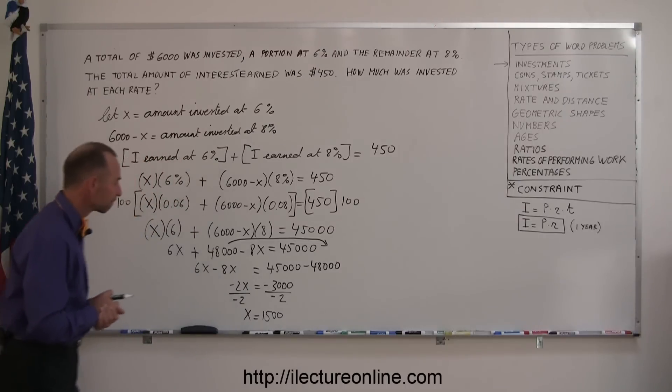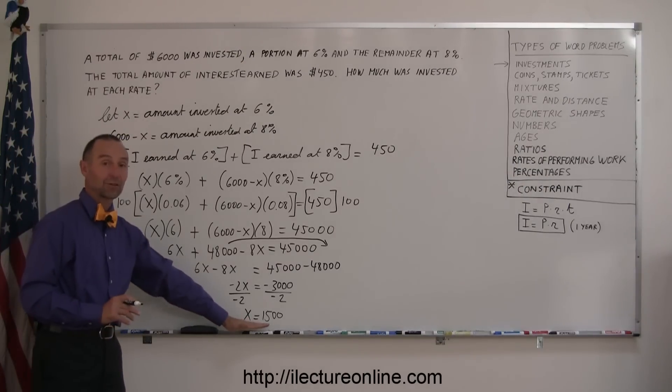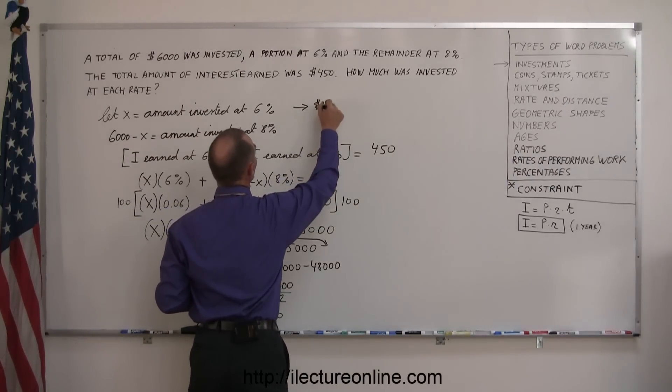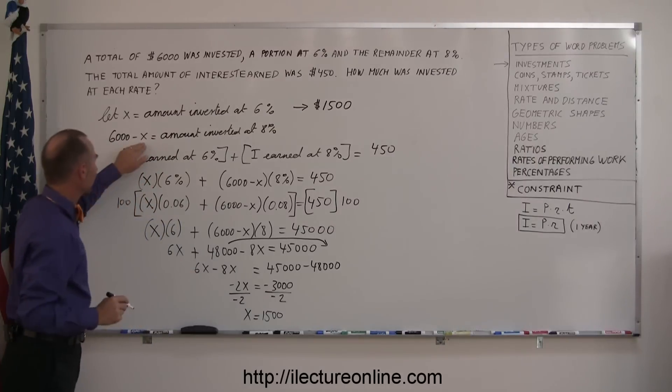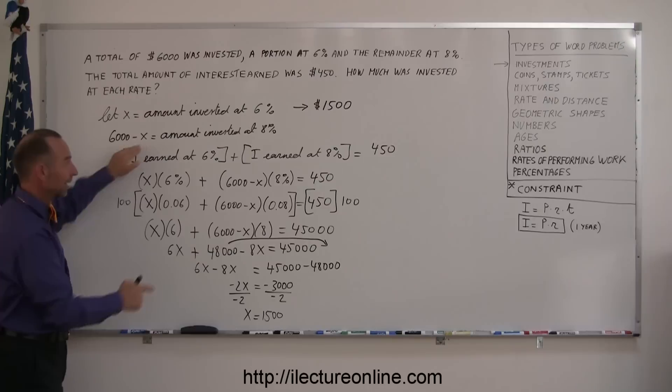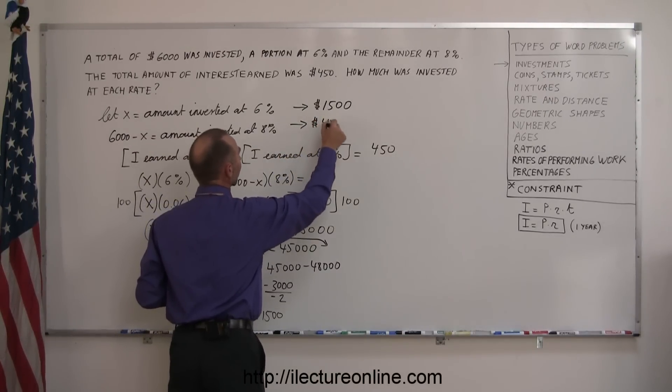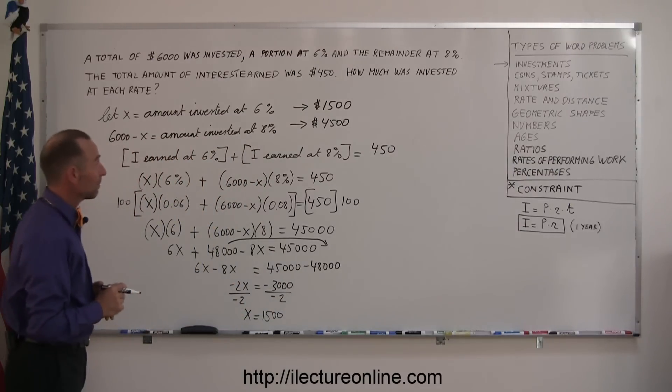All right, if that's correct, I can come back up here and say, okay, if X is the amount invested at 6%, that means I invested $1,500 at 6%, and 6,000 minus X, that's 6,000 minus 1,500, that gives me 4,500, so 4,500 at 8%.